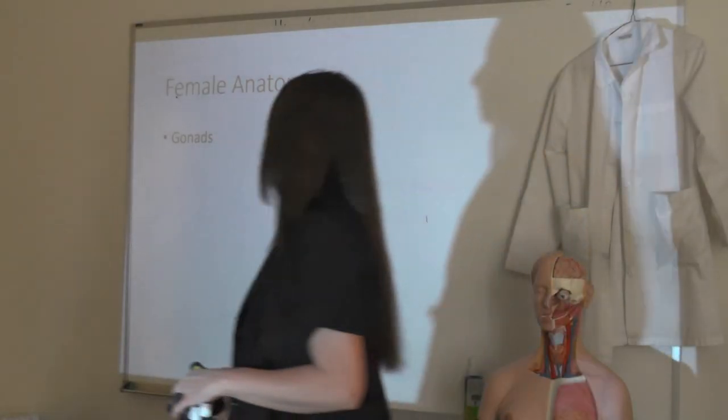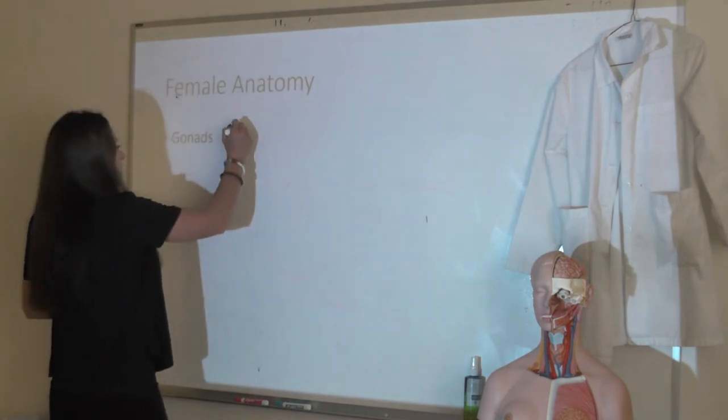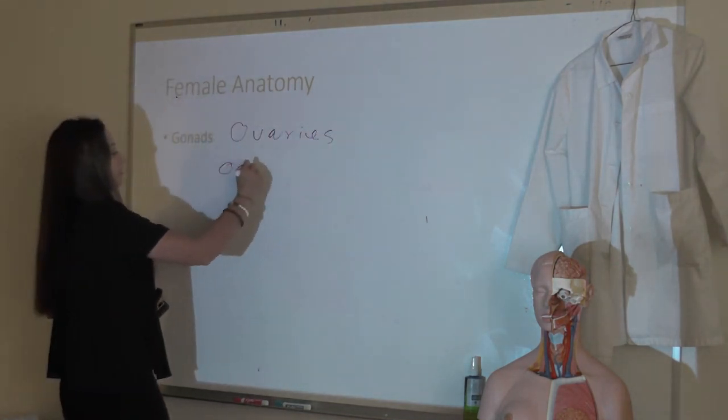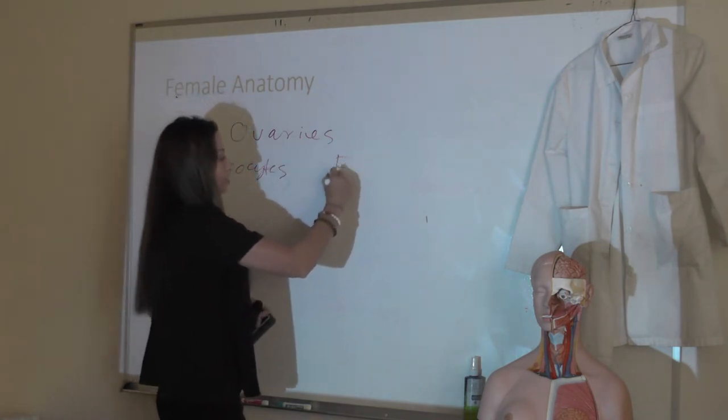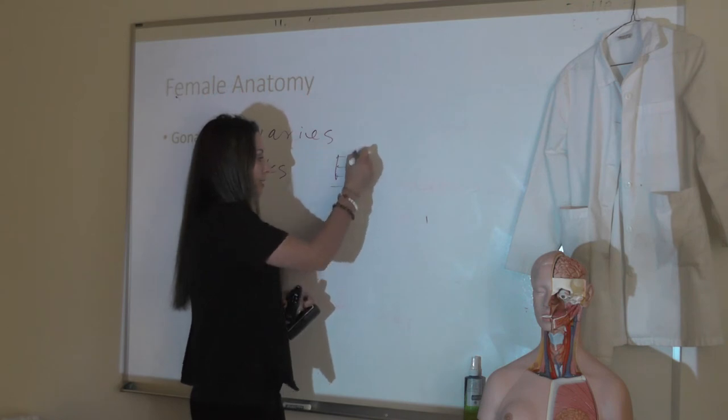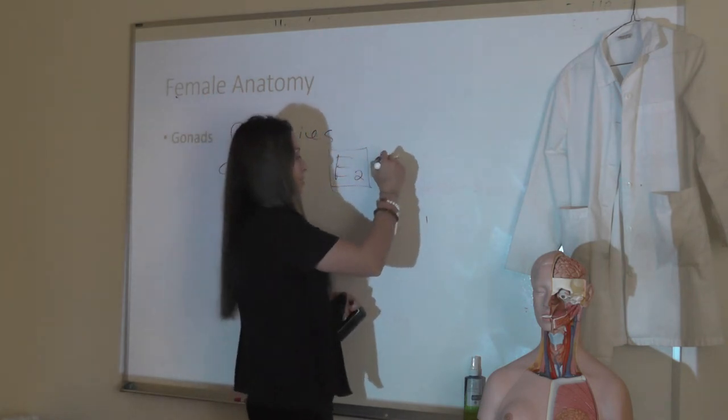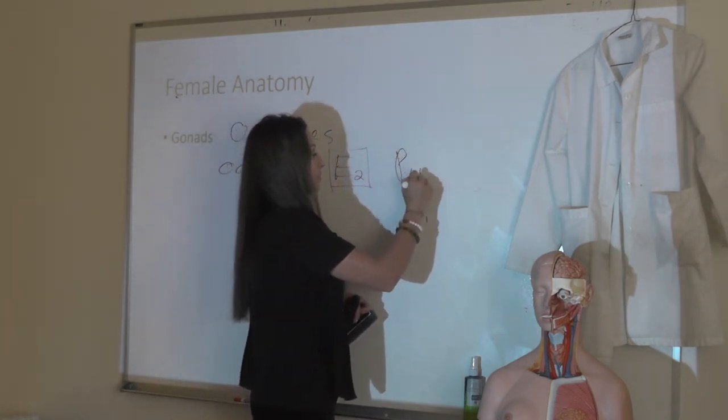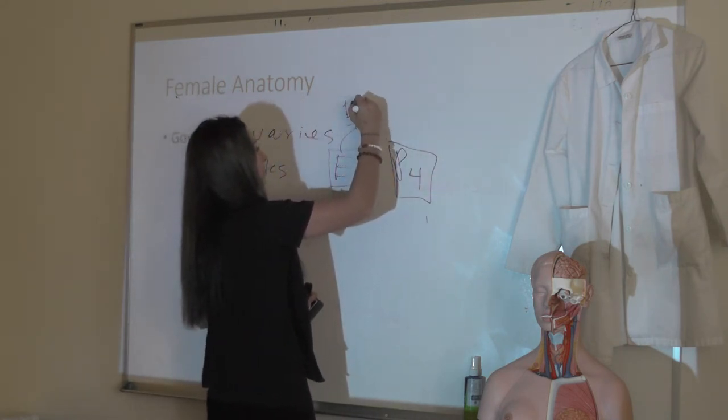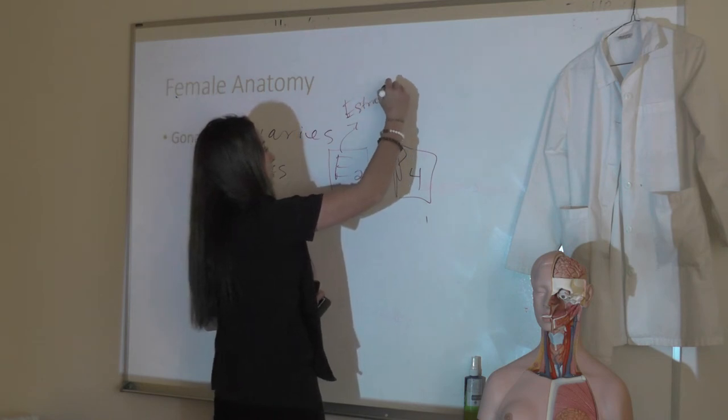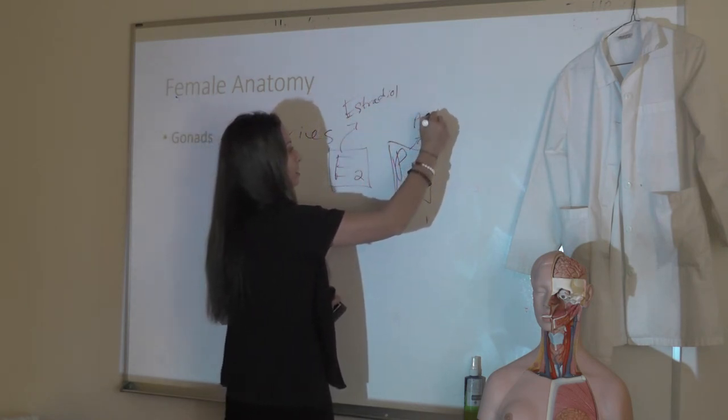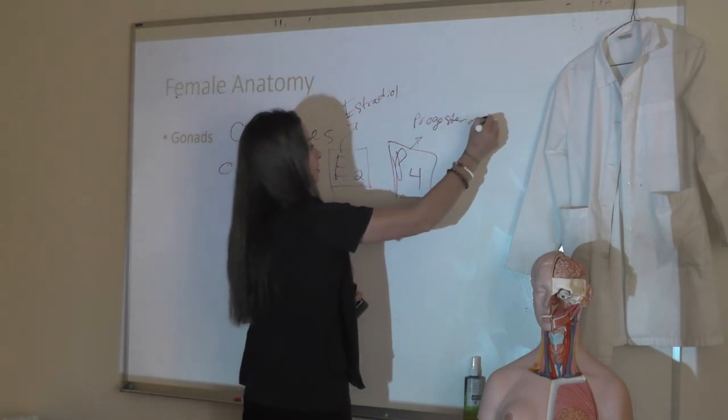In females, our gonads are the ovaries. Our ovaries are going to produce the gametes, oocytes, and the sex hormones estrogen, which is estradiol in humans, abbreviated E2, and progesterone, which is abbreviated P4. I'm going to use these abbreviations from now on. E2 is estradiol - that's our estrogen. And progesterone is P4.